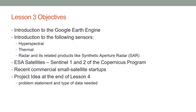The objectives for Lesson 3 are an introduction to the Google Earth Engine platform and an introduction to hyperspectral and thermal sensors. Both of these are passive sensors — hyperspectral receives reflected energy coming up to the sensor, whereas thermal sensors receive the emitted thermal emissions. Active remote sensing includes radar and its related products like synthetic aperture radar, also known as SAR.